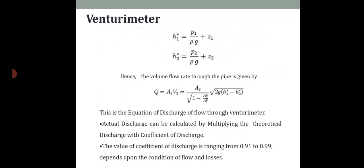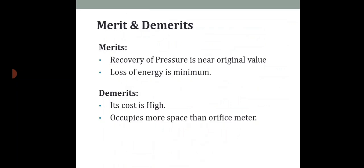The discharge Q is: Q = A₂ / √(1 - A₂²/A₁²) · √(2g(h₁* - h₂*)). This is the theoretical discharge equation for flow through a venturi meter. The actual discharge is obtained by multiplying the theoretical discharge by the coefficient of discharge Cd, whose value ranges from 0.91 to 0.99 depending upon the conditions of flow and losses.